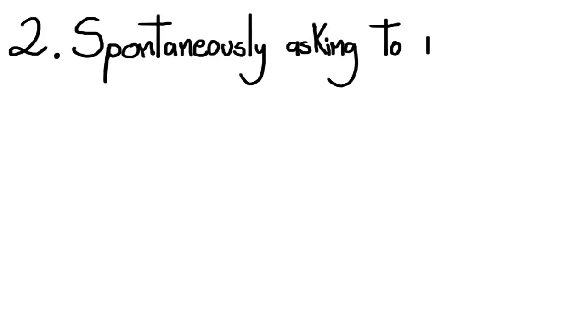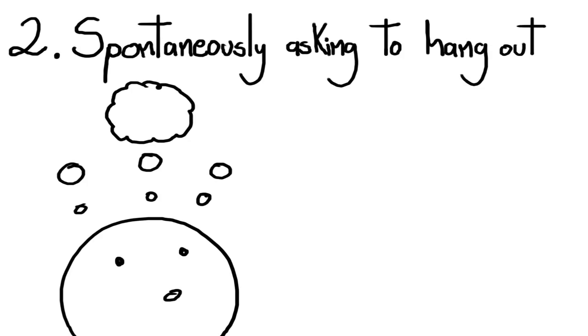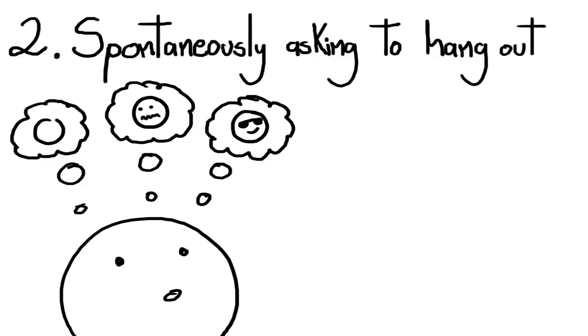Two: Spontaneously asking you to hang out. Ambiverts' attitudes can change depending on whether they're in a work or school setting, as opposed to a more social one. Because of this, you might at first think them to be very introverted, only to be surprised later when they ask you to come along, maybe even with a few of their friends.